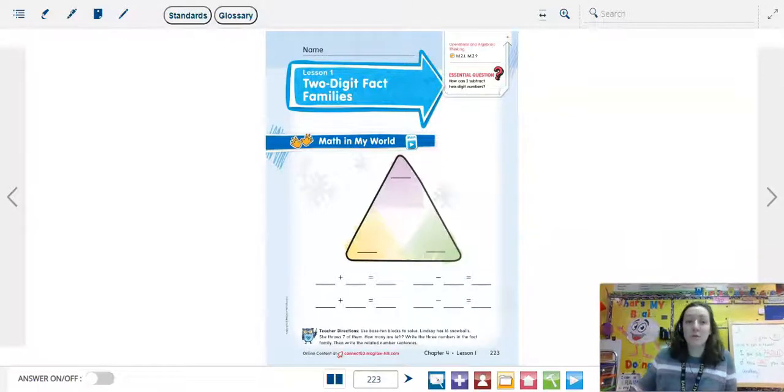So the first thing they want us to review is fact families, but specifically with two digits. To remind you, fact families are those related factors. The numbers in the fact family all go together and can make the two addition sentences and two subtraction sentences.